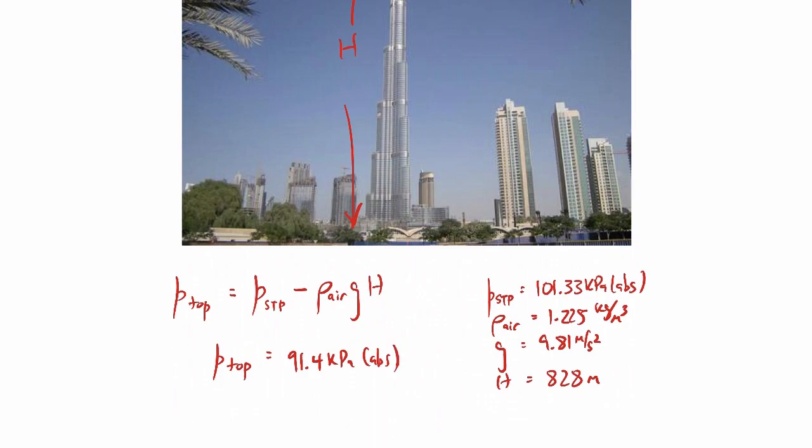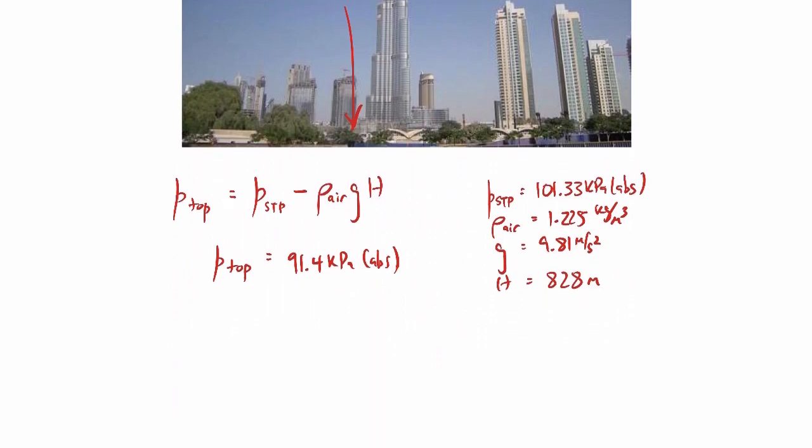Or, if you like to do it in terms of a ratio, pressure at the top divided by the pressure at the bottom, that comes out to be about 0.902. So it's about 90% of sea level pressure. So it's dropped 10%. It's a substantial amount. But we've also gone 828 meters, so we've gone up quite a ways.